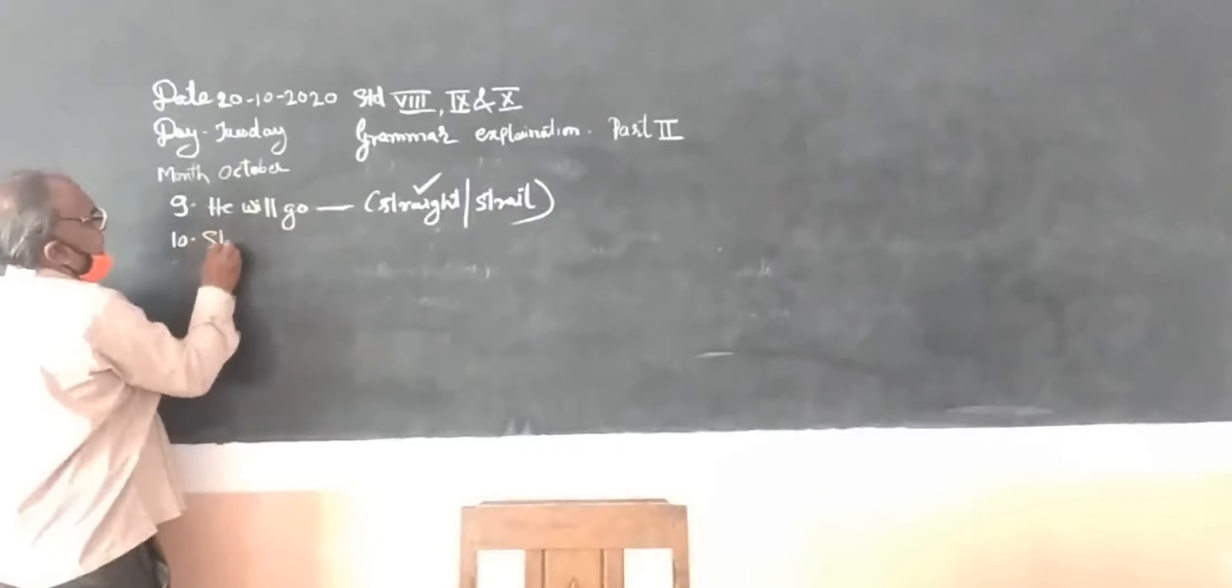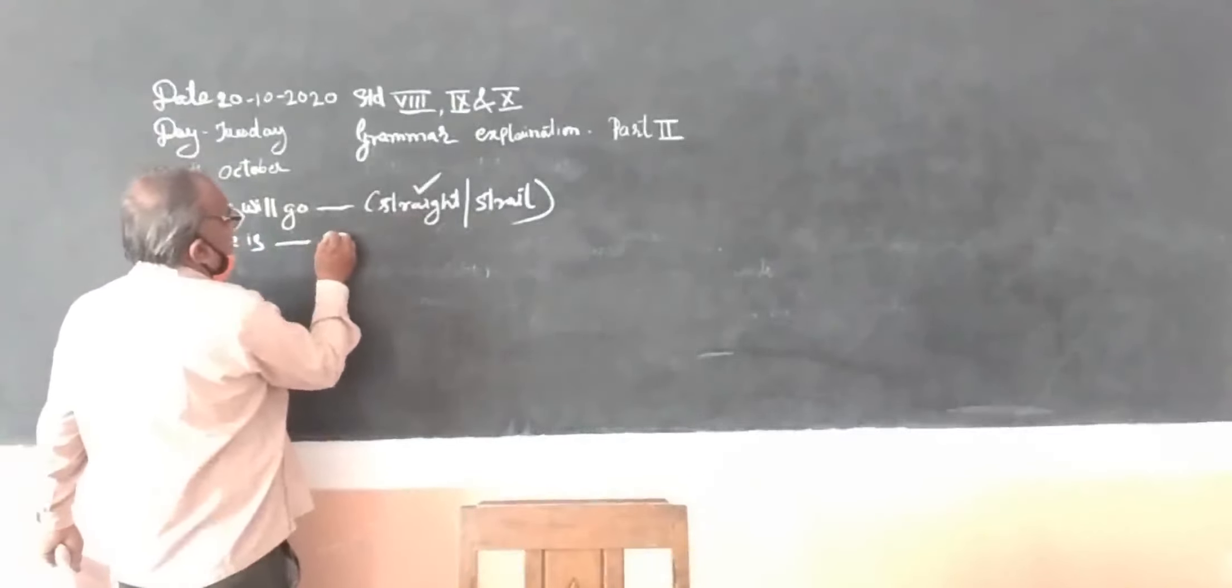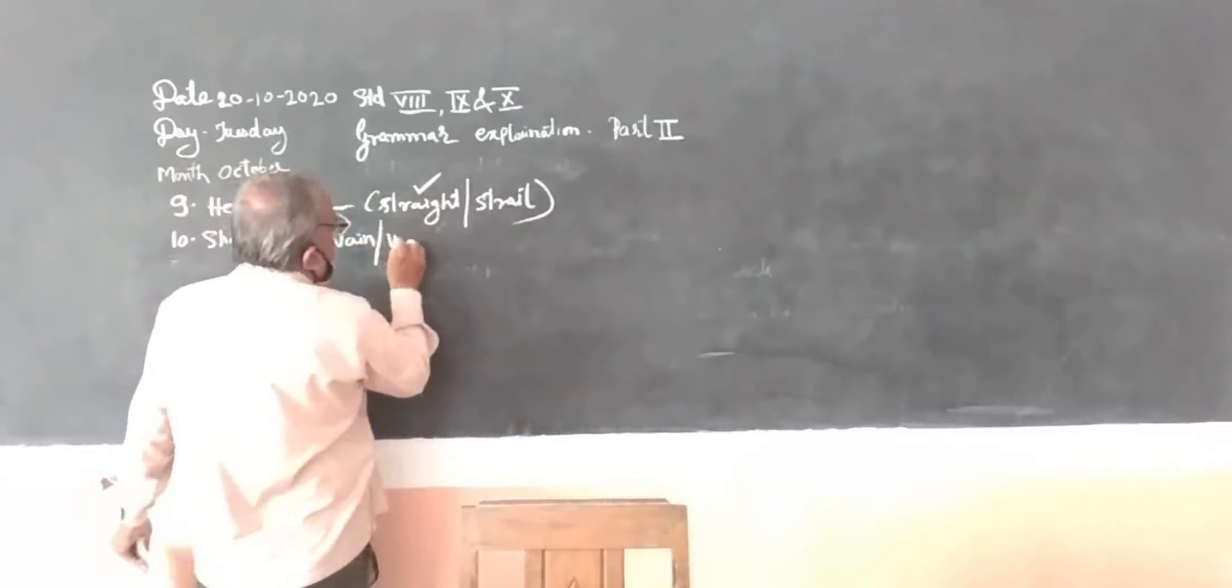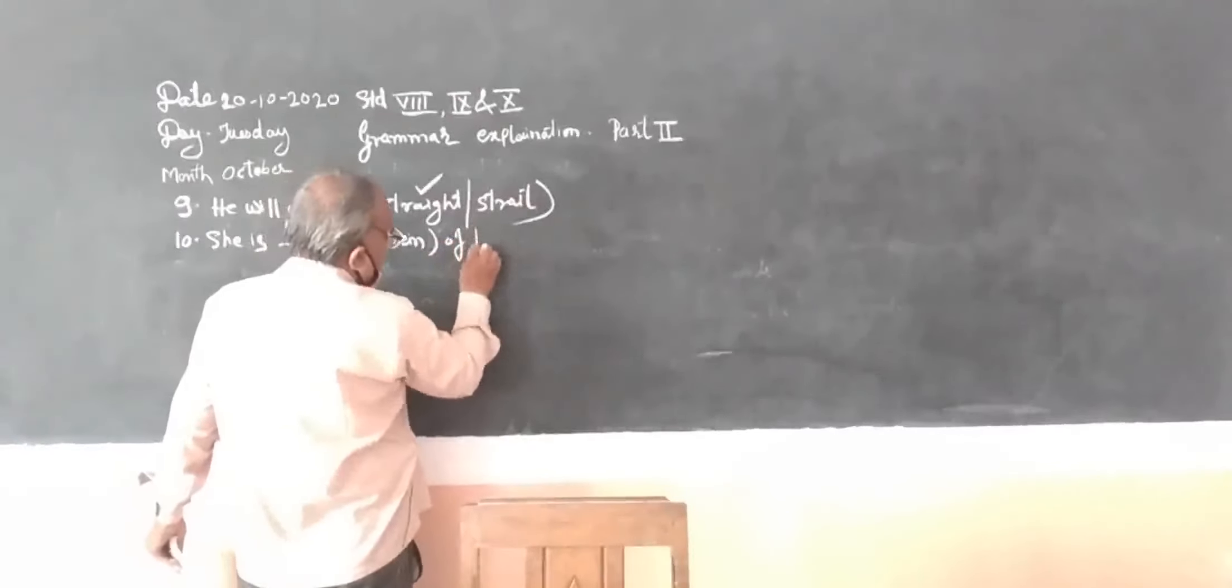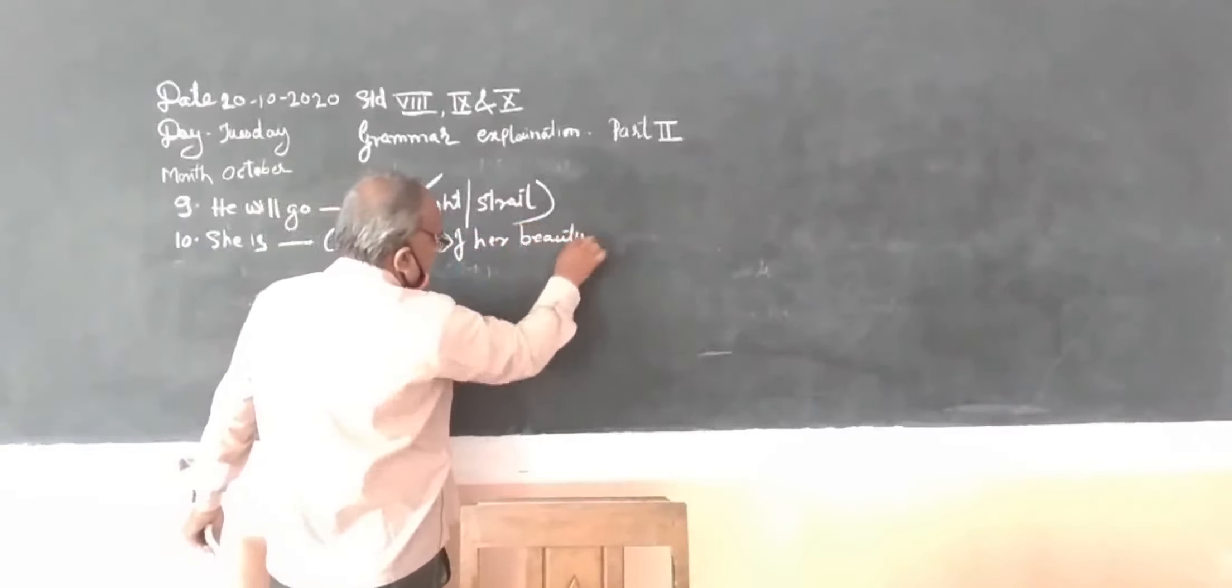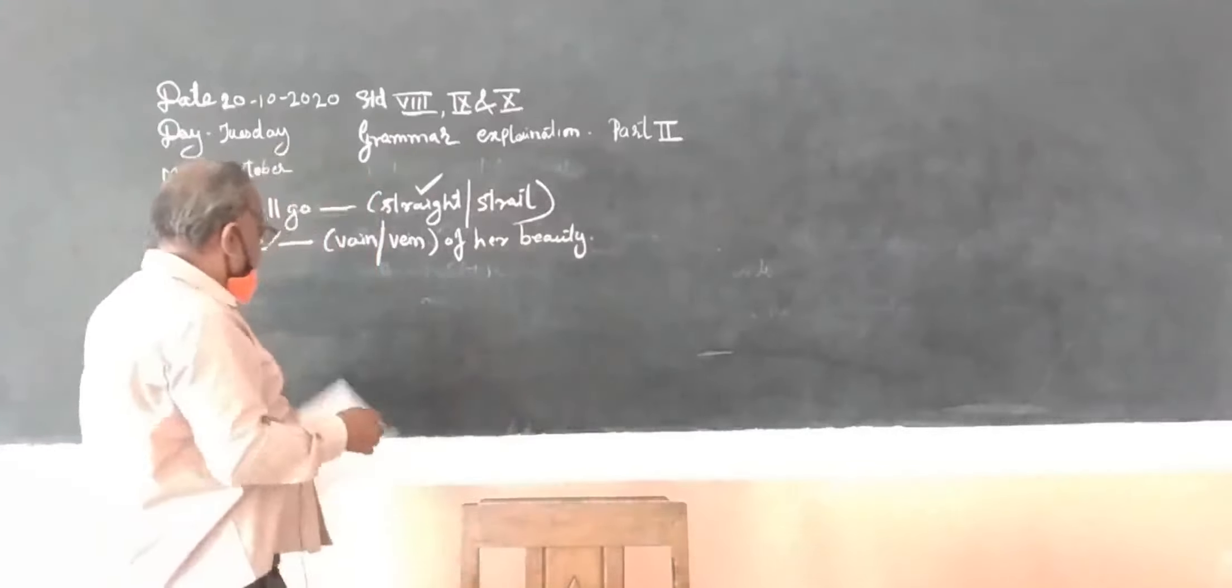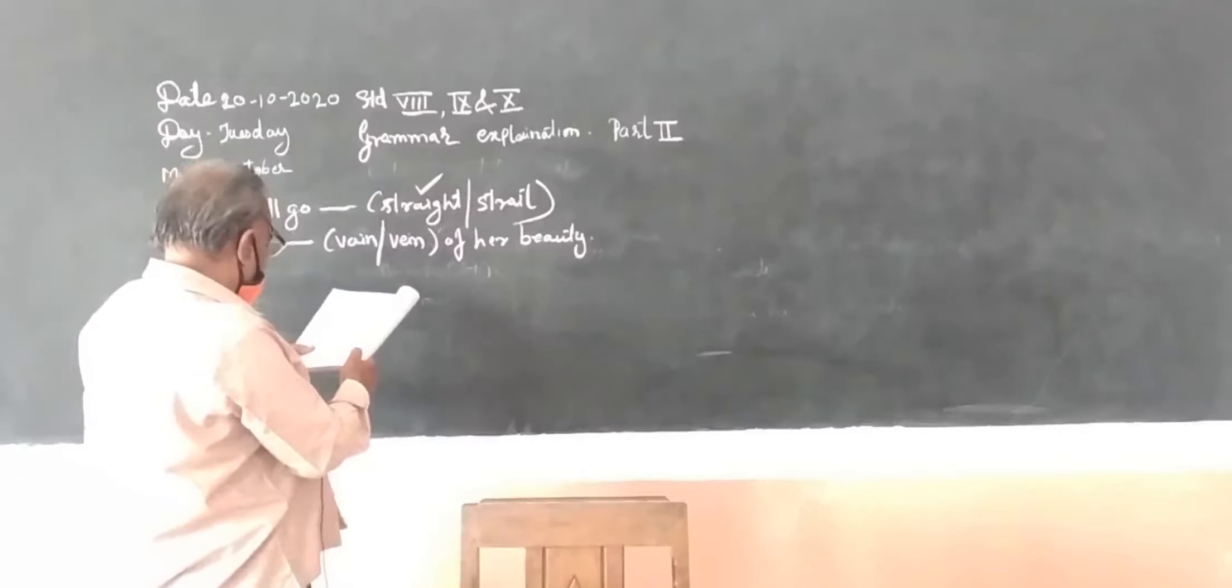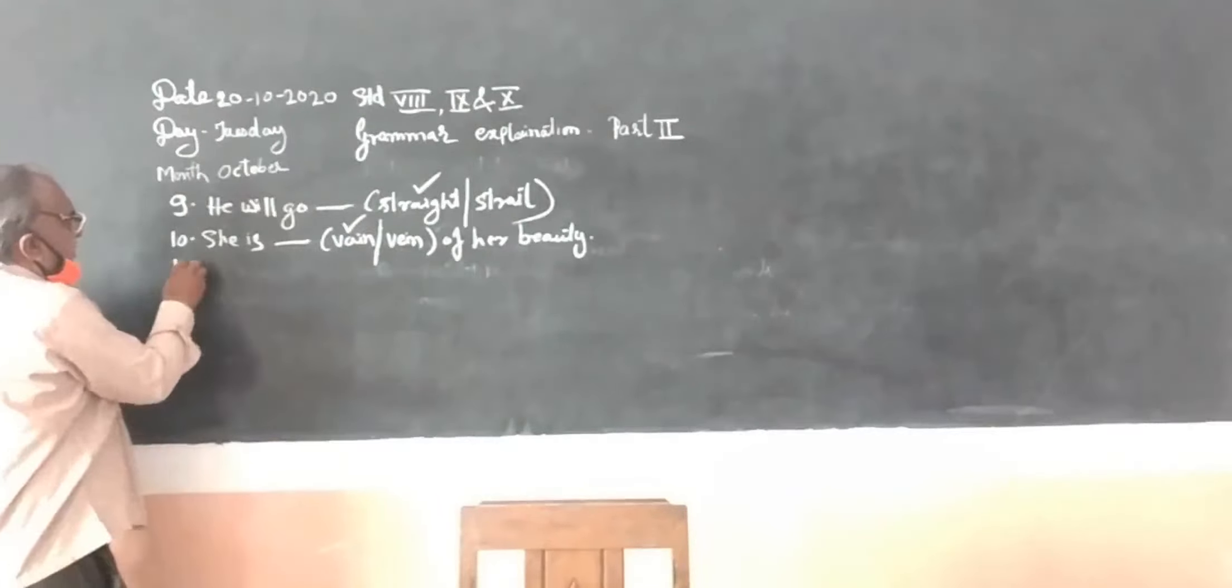Tenth one: she is V-A-I-N vain, V-E-I-N vein, V-A-N-E vane, of her beauty. Vain means she doesn't know about her own beauty. So we have to use V-A-I-N vain.